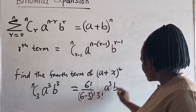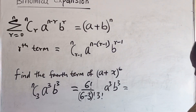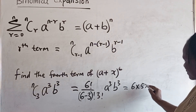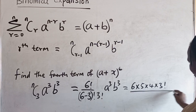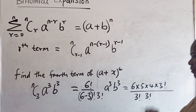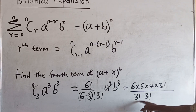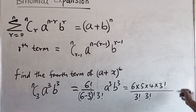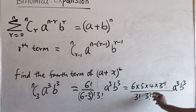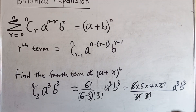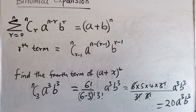This is equal to 6 times 5 times 4 — I stop here because 3 factorial is in the denominator and will cancel. 3 factorial is 3 times 2, which is 6, so this gives 20. Therefore the fourth term is 20A cubed B cubed. This is the fourth term of this expansion using the binomial theorem.